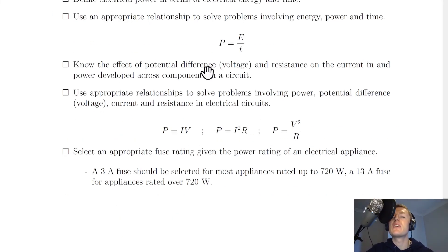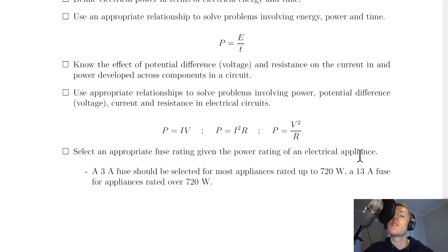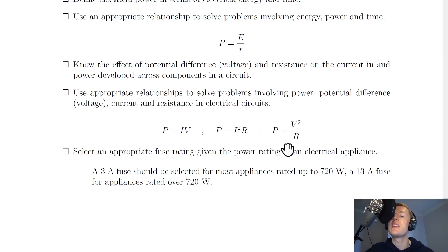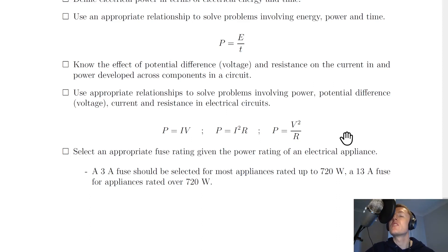You need to know the effect of potential difference (voltage) and resistance on the current and power developed across components. Use these relationships: P = IV (power from current and voltage), P = I²R (power from current squared times resistance), and P = V²/R (power from voltage squared divided by resistance). Which equation you use depends on what values you're given in the question — in summary there are four power equations available.